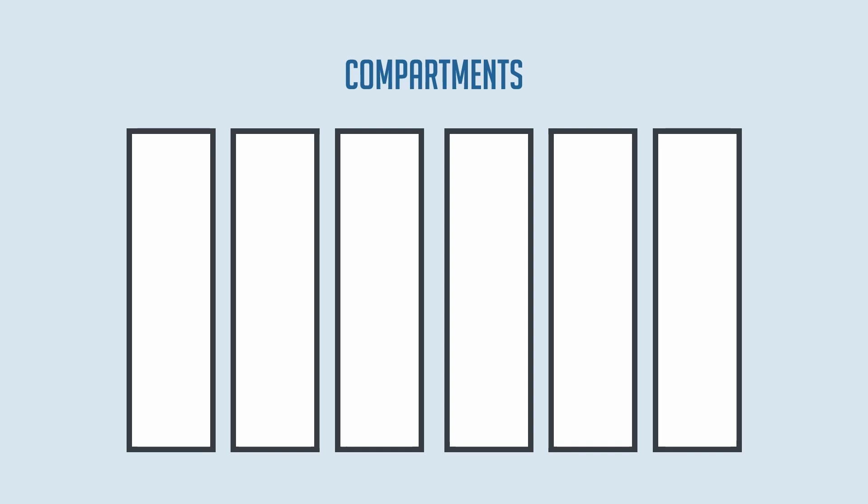We have different tissues in our body, all of which have different properties and therefore different saturation behavior. In order to map these, since a list of each individual tissue would no longer be manageable, they are grouped together in so-called compartments. A compartment therefore comprises several tissues with the same saturation behavior and the same half-saturation time.